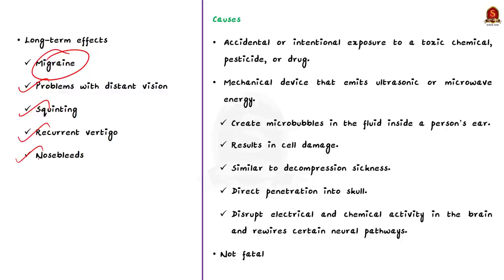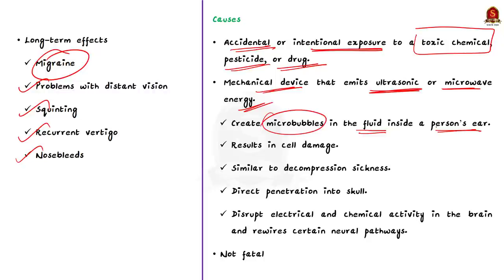Now, let us see what causes this syndrome, i.e., the Havana syndrome. Initially, experts suspected that Havana syndrome may be caused by either accidental or intentional exposure to a toxic chemical pesticide or drugs. However, no traces of such agents were found in affected people or their homes. The most likely cause of Havana syndrome is assumed to be some type of mechanical device that emits ultrasonic or microwave energy. Such radio frequency energy exposure through highly specialized bioweaponry could potentially create microbubbles in the fluid inside a person's ear. When those bubbles travel through the blood into the brain, they can cause minute air emboli that results in cell damage. It is similar to decompression sickness of deep sea divers.